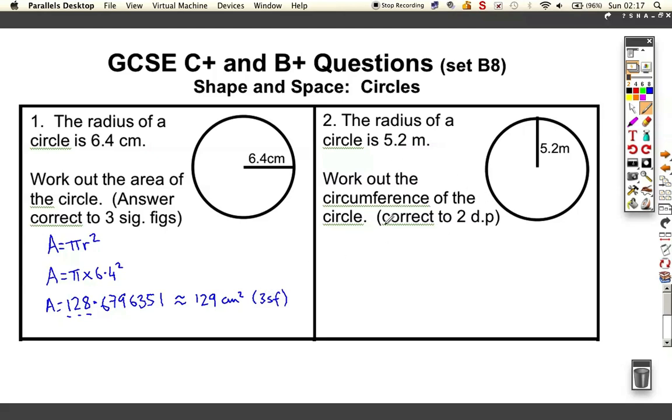This time we're asked to work out the circumference. The formula for circumference is pi times the diameter or you might know it as 2 pi r. They're both the same, just means that the diameter is twice the radius. I'm going to times it by 10.4 because that is twice the radius.